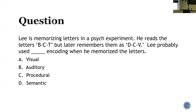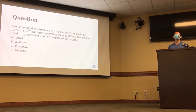Let's do a question together. Lee is memorizing letters in a psych experiment. He reads the letters B, C, T, but Lee remembers them as D, C, V. Lee probably used what type of encoding when he memorized the letters? The answer is acoustic — auditory encoding.